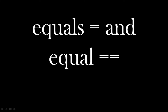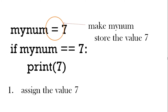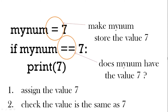There's a difference between equals (one equal sign) and equals equals (two equal signs). My number equals seven assigns the value seven to the variable. In the if statement, my number equals equals seven checks whether the variable has the value seven. So in the if statement, instead of greater than or less than, if you want to check if something's the same, you use two equal signs, not one.